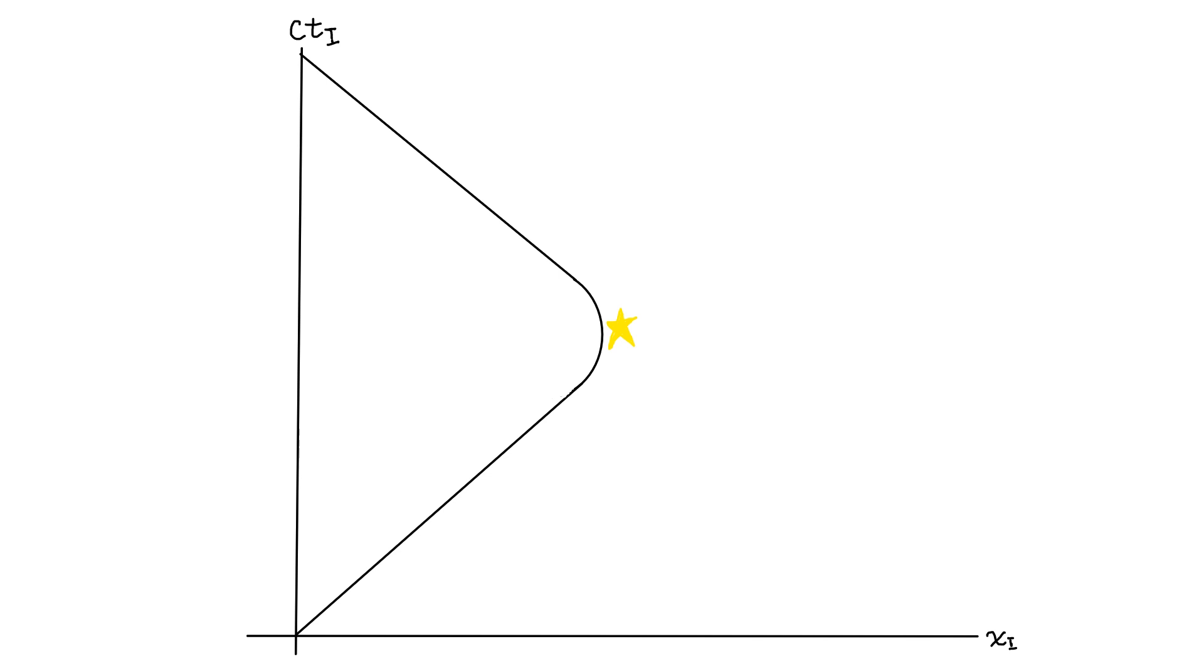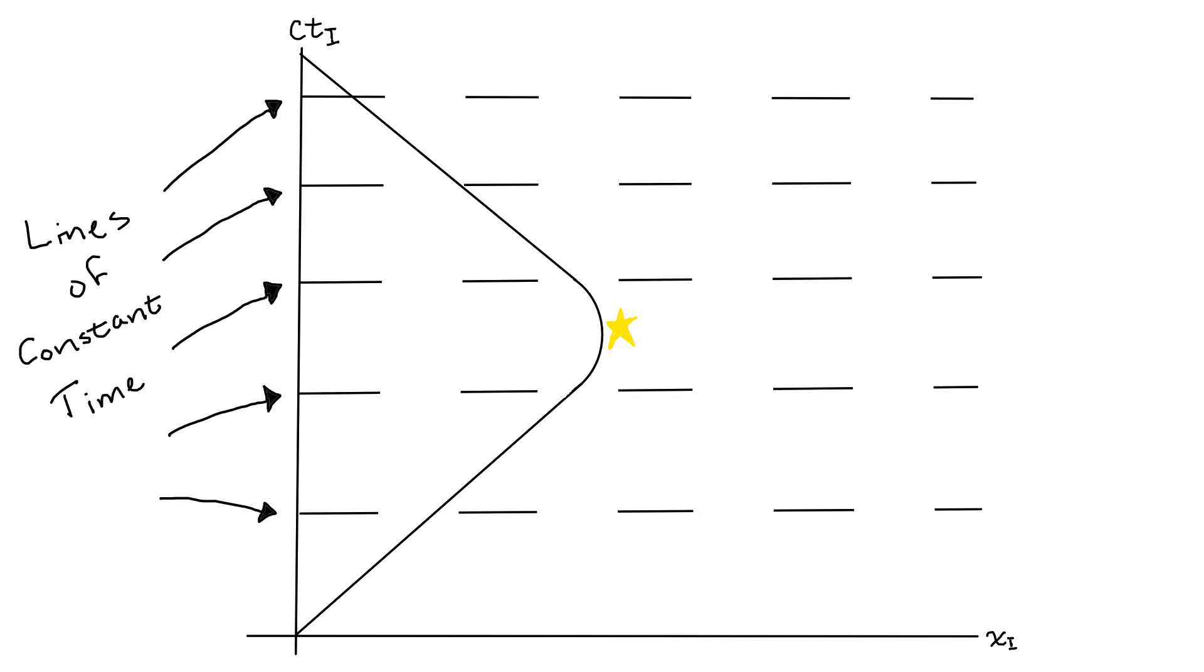In Isaac's frame, lines of constant time will just be horizontal. Each one of these lines corresponds to all of the things that happen at the exact same time in Isaac's frame.